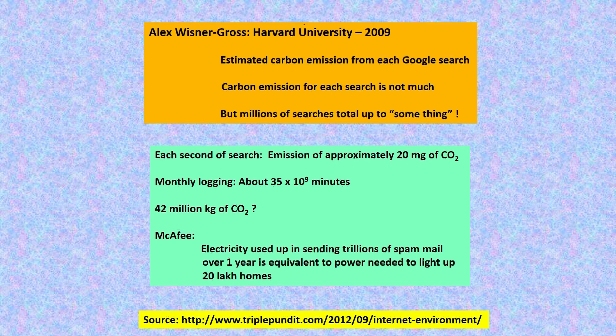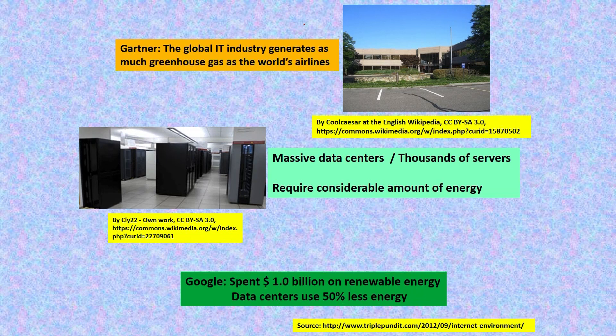McAfee has found that electricity used in sending trillions of spam mails over one year is equivalent to the power needed to light up 2 million homes. The global IT industry generates as much greenhouse gas as the world's airlines, and the massive data centers and thousands of servers required to run the internet require a considerable amount of energy.